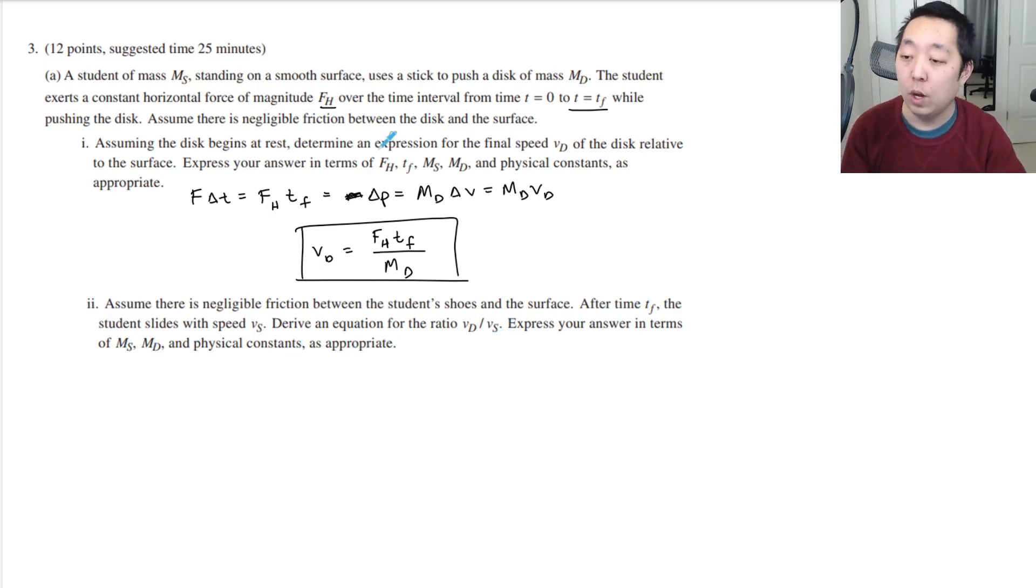You could do conservation of momentum, or you could say equal and opposite. The disk must have exerted an equal and opposite impulse on the person. So the student feels the same impulse FHTF, but that then applies to MS times his VS. So VS is equal to FHTF over MS.